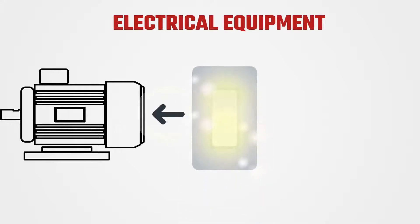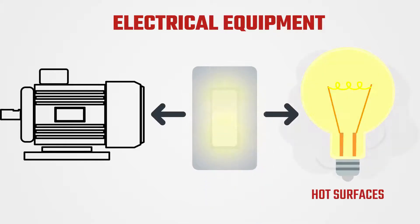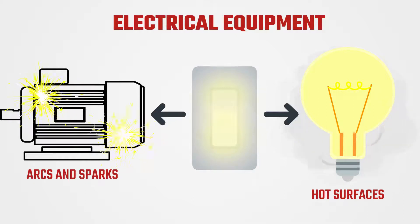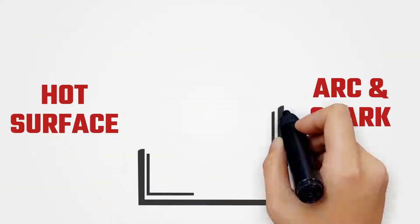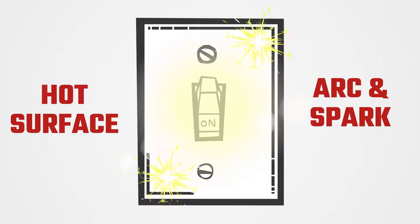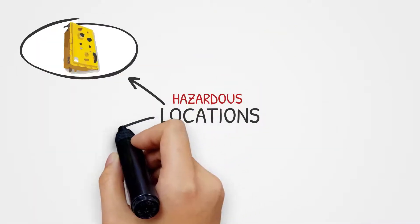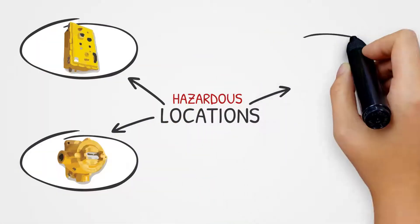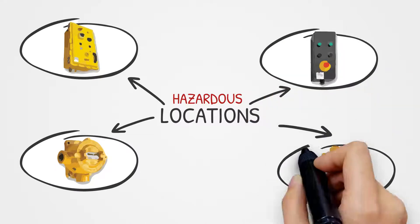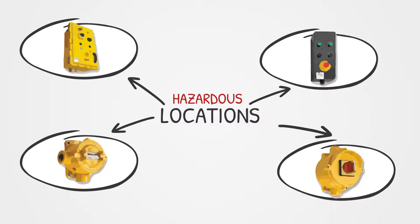Electrical equipment can provide an ignition source, because an electrical circuit can raise the temperature of equipment surfaces and also generate even brief, seemingly harmless arcs and sparks. In other words, two main sources of ignition from electrical equipment are hot surfaces and arcs and sparks. Even though electrical devices can create conditions that become explosive if all the required elements of the fire triangle are present, electrical equipment is still required, even in hazardous locations.